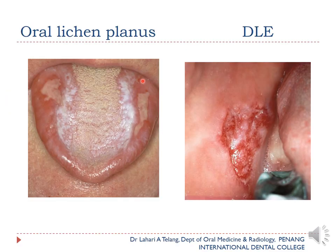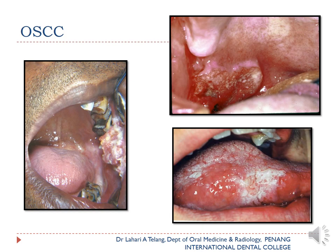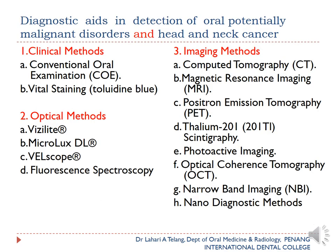Clinically, we can see bilateral ulcerative lichen planus with plaque-like areas, discoid lupus erythematosus as a mixed red and white lesion, and frank oral squamous cell carcinoma — appearing as an ulceroproliferative growth with raised borders on the lateral border of the tongue. These are clear examples of how squamous cell carcinoma appears clinically.